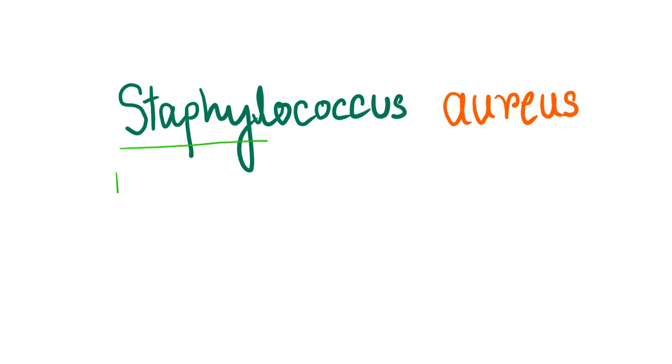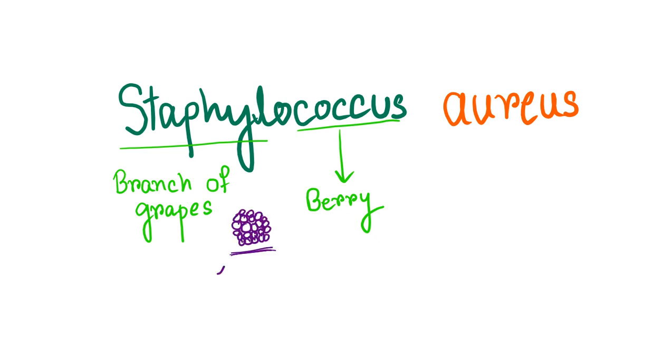Today our topic of discussion is Staphylococcus aureus, a gram-positive cocci. The word staphyl comes from the Greek word staphyli, which means branch of grapes, and the word coccus comes from the Greek word coccos, which means berry. They are so named because they are arranged in grape-like clusters when seen under light microscope.